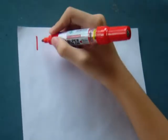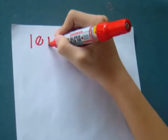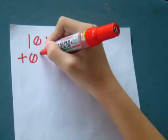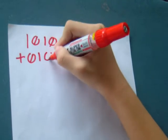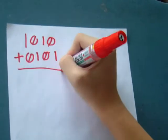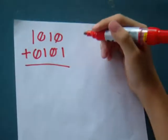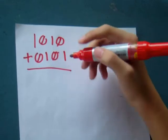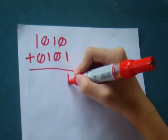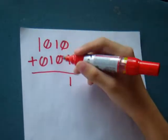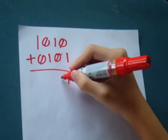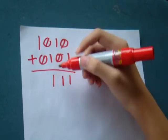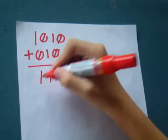First, you add 1, 0, 1, 0 plus 0, 1, 0, and 1. As I said earlier, 0 plus 1 equals 1. 0 plus 1 equals 1. 0 plus 1 equals 1. And 1 plus 0 equals 1.